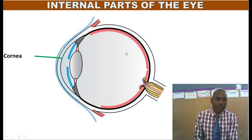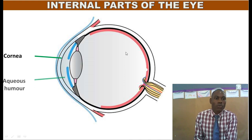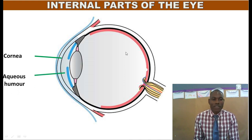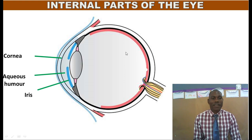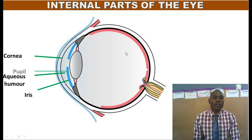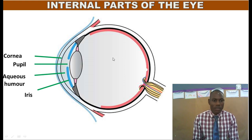We have the first part that we call the cornea — we talked about that. We also talked about the aqueous humor. We had the iris, and we said that the iris is the part of the eye that controls the amount of light entering the eye. We also have the pupil — that is the part of the eye that lets in light.